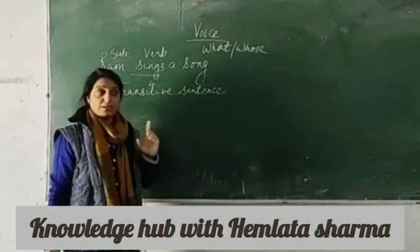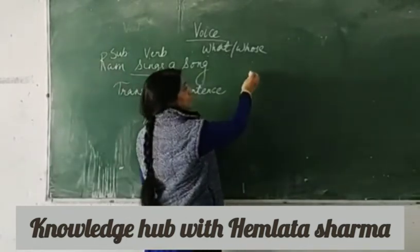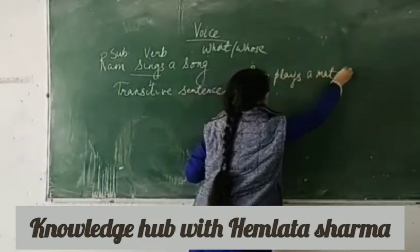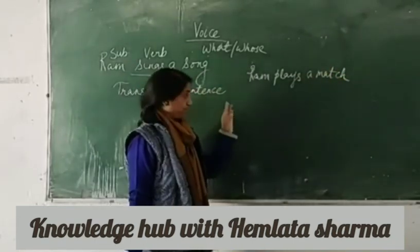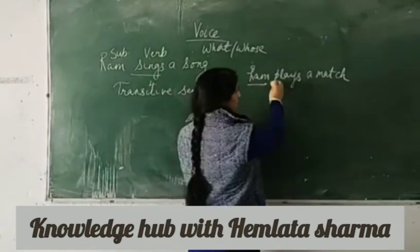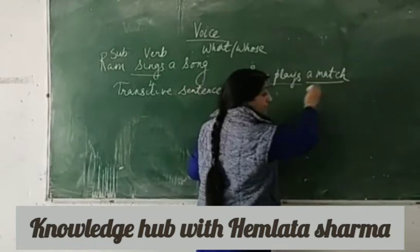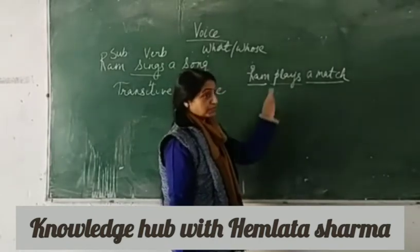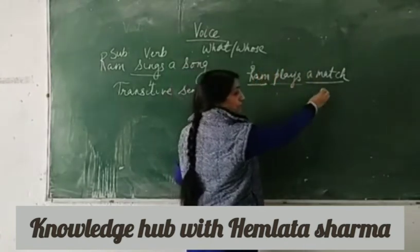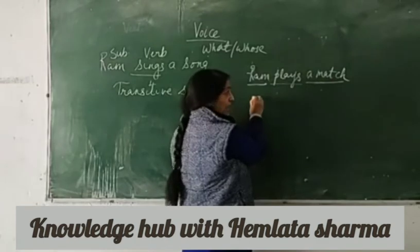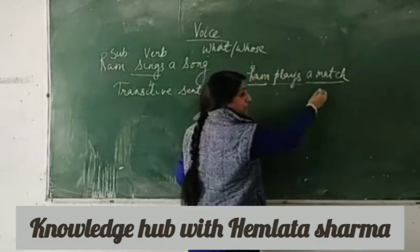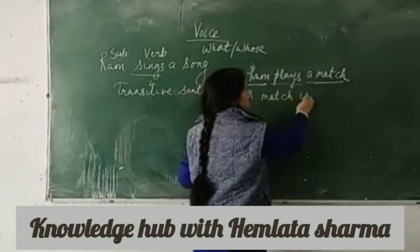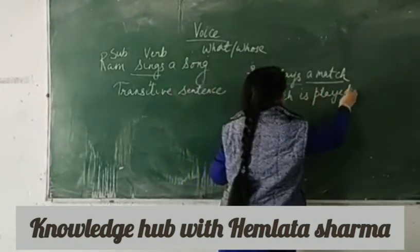How do we change a sentence from active to passive? Let's take a sentence: Ram plays a match. In this sentence, Ram is a subject, plays is a verb, and a match is an object. Now how do we change it from active to passive? Here an inversion takes place — inversion means ulta-pulta ho jata hai. Ram, that is the subject, takes the place of an object, and the object takes the place of the subject. The subject, which becomes an object, takes the preposition 'by.' So: A match is played by Ram.